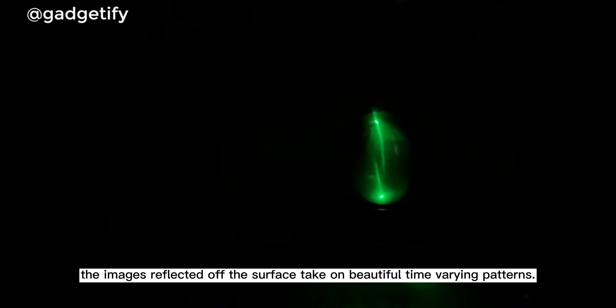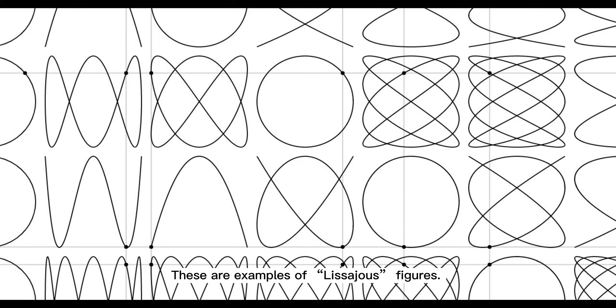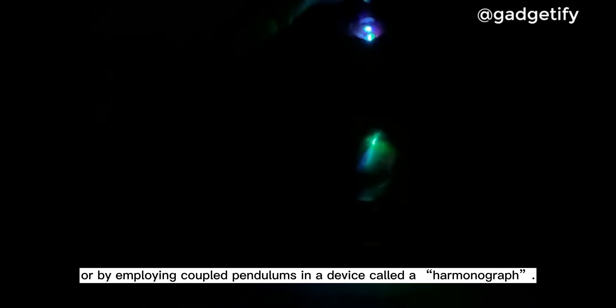As this top begins to settle down in its motion, if there are lights sitting above it, the images reflected off the surface take on beautiful time-varying patterns. These are examples of Lissajous figures. They are usually produced by use of oscilloscopes or by employing coupled-type pendulums in a device called a harmonograph.